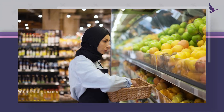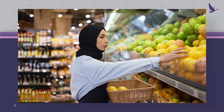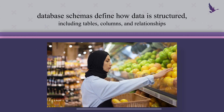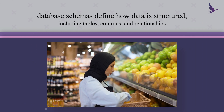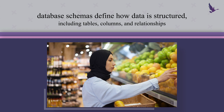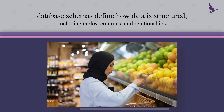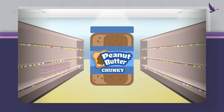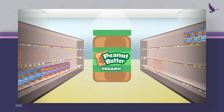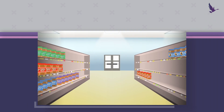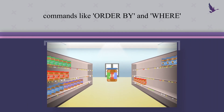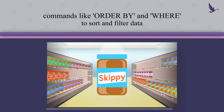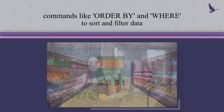Just as products are organized by categories in the supermarket, database schemas define how data is structured, including tables, columns, and relationships. And just like you can sort and filter products by brand or price, SQL provides commands like ORDER BY and WHERE to sort and filter data as needed.